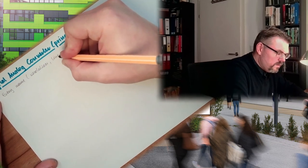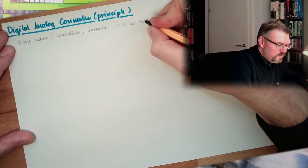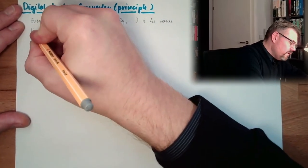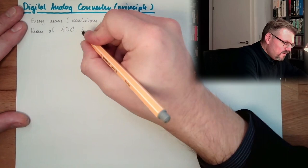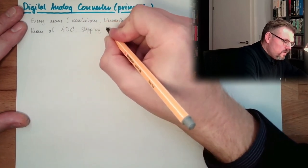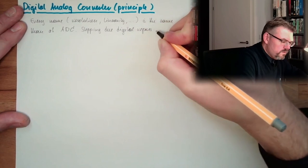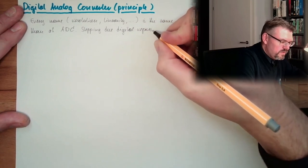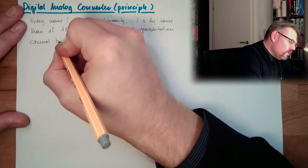So, every name is the same. Resolution, linearity, and so on. It's the same as ADCs, analog digital converters. And stepping due to digital representation cannot be avoided.